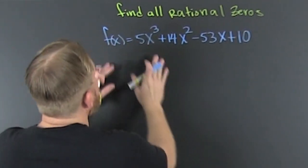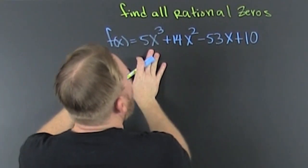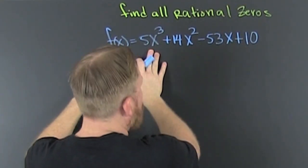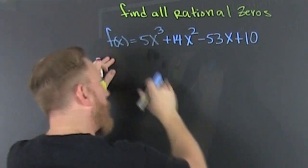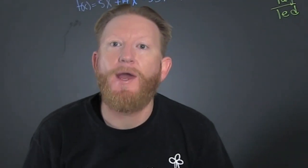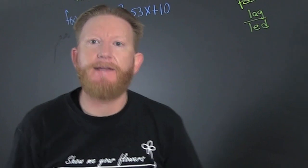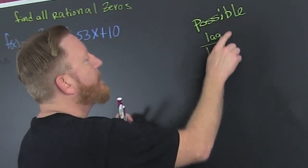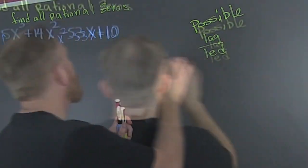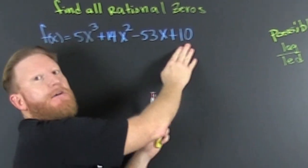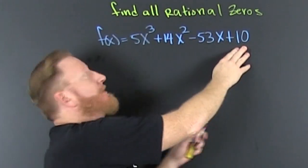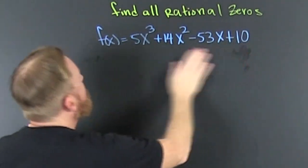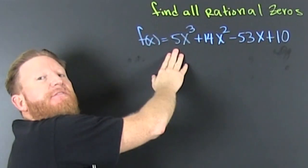We are trying to find all the possible rational zeros. We first need the possible rational zeros so that we can go and divide. That's lagging divided by leading. My lagging is 10 and my leading is 5.